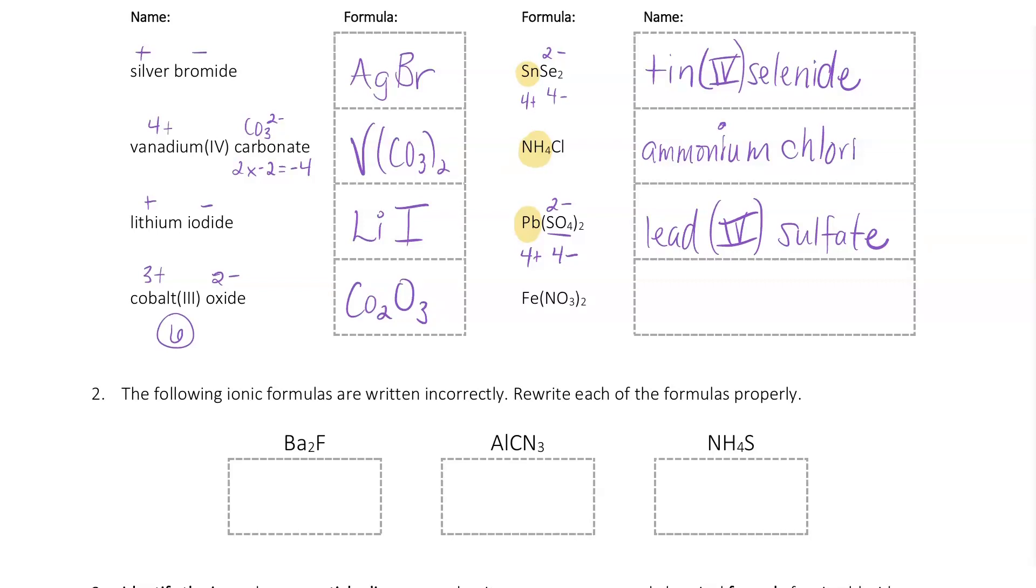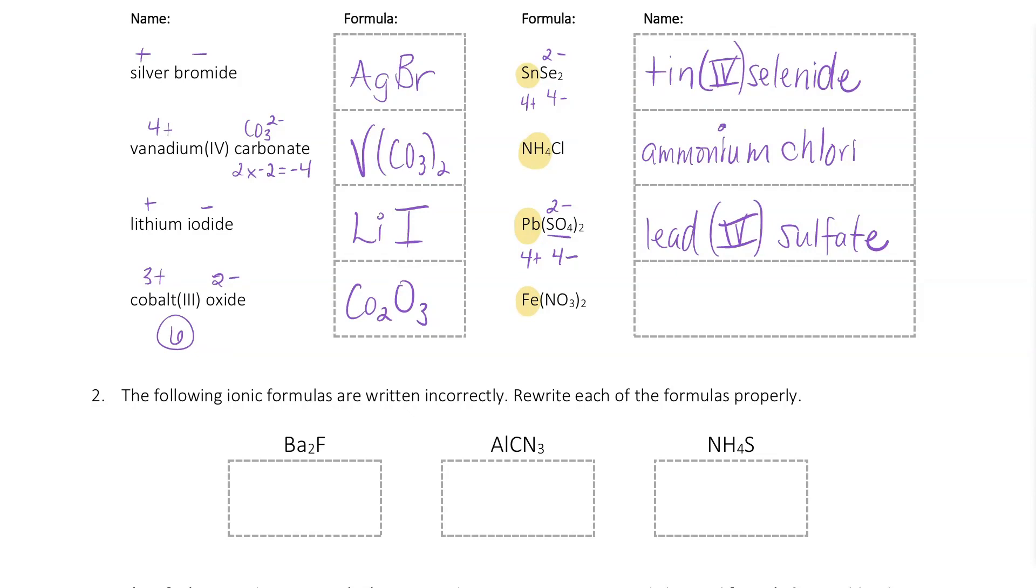Similar situation on this last one. We've got another one with the polyatomic ion and a transition metal. So I know that Fe is going to be iron. And then I know that NO3 is nitrate. And I know that by looking at my chart of polyatomic ions. I can also see that this is going to have a minus 1 charge. So if there's two of those, that's minus 2 altogether, which means to make this neutral, that one iron has to be plus 2.